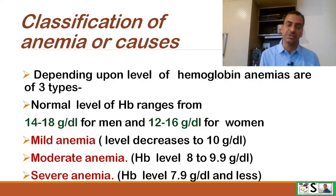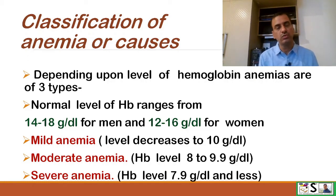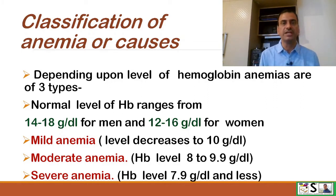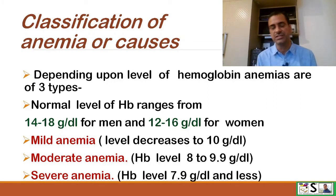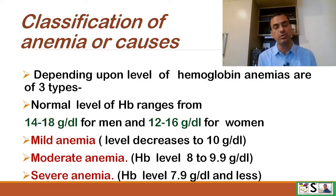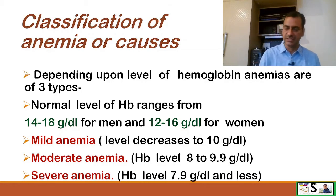Moderate anemia is classified as a hemoglobin level of 8 to 9.9 gram per deciliter, and severe anemia is classified as a hemoglobin level below 7.9 gram per deciliter.